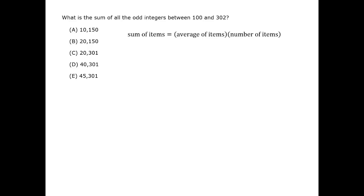The odd integers between 100 and 302 start at 101, then they go all the way up to 197, 199, 201, and all the way up to 299, finishing at 301.